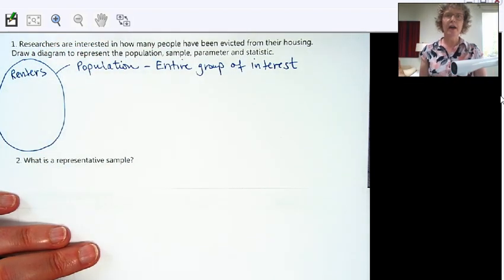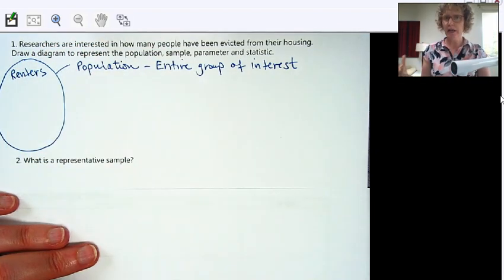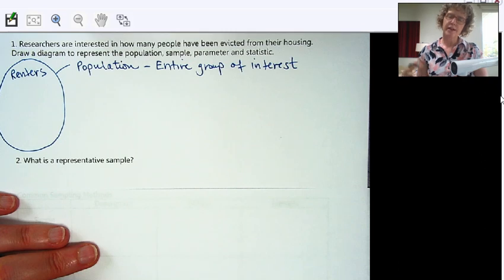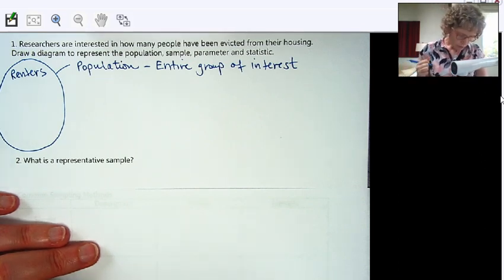Well, renters are the only ones who can be evicted from their housing. So our population would be renters, whether they're in an apartment, a house, a duplex, any type of rental. If someone owns their house and have a mortgage, they could get foreclosed on, but that would be different than being evicted.